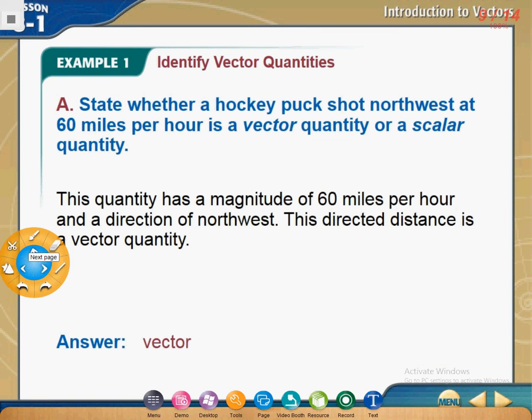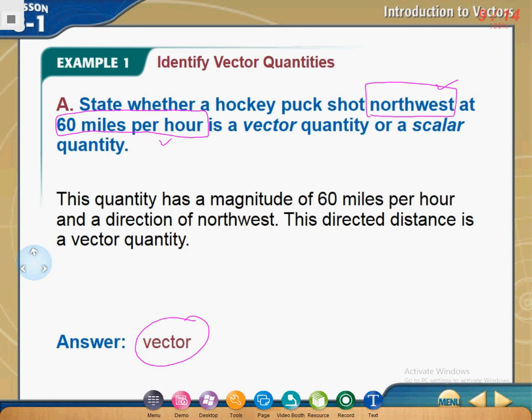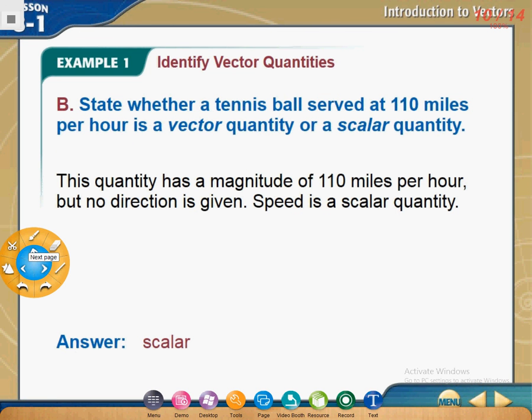Let's start. I will solve this one. I want you to try to solve the second question. State whether a hockey puck shot northwest at 60 miles per hour is a vector quantity or a scalar quantity. Let us look at the key words here. The first key word is northwest, and 60 miles per hour. This is a magnitude, and this is, yes you are right, this is the direction. So automatically, this is the vector. Can you try this one alone? State whether a tennis ball served at 110 miles per hour is a vector. Do we have anything that tells us that we have a direction? It's just 110 miles per hour. I don't have any direction. So it's a scalar.